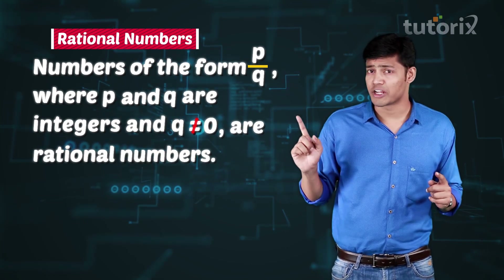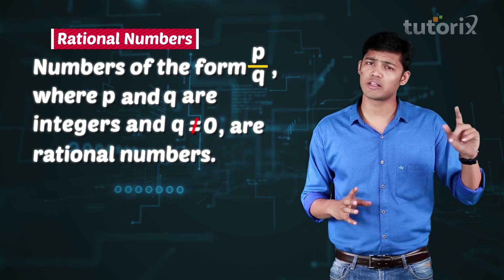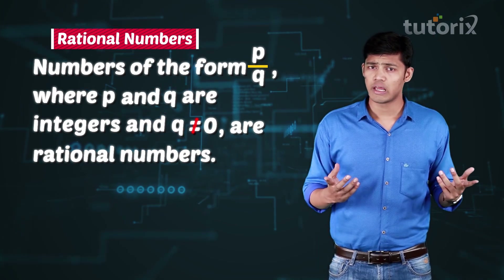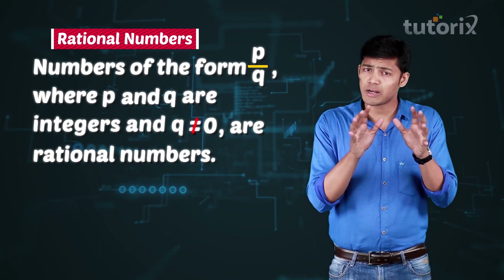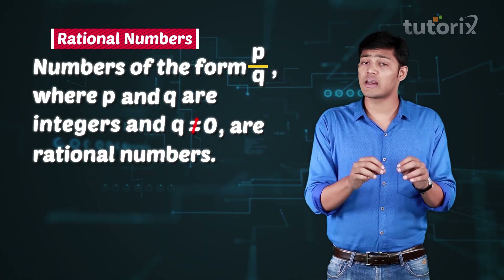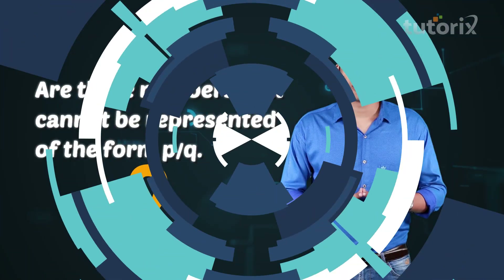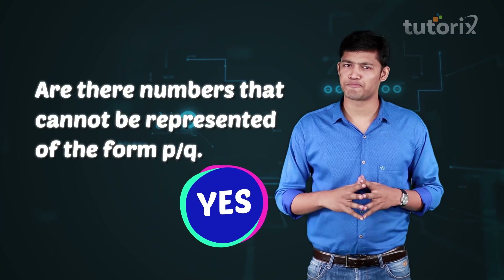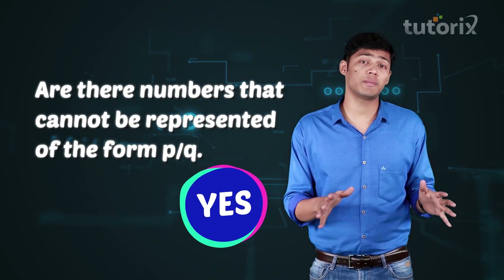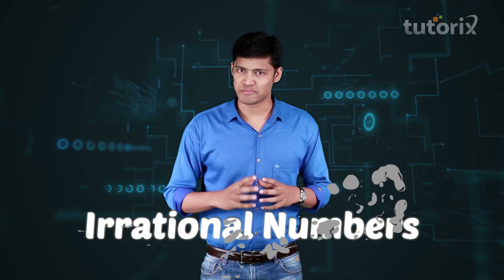This definition of rational numbers leads to another question: if there are numbers that can be represented in p by q form, are there numbers which cannot be represented in p by q form? The answer is yes. There are numbers which cannot be represented in the form p by q, and they are given the name irrational numbers.